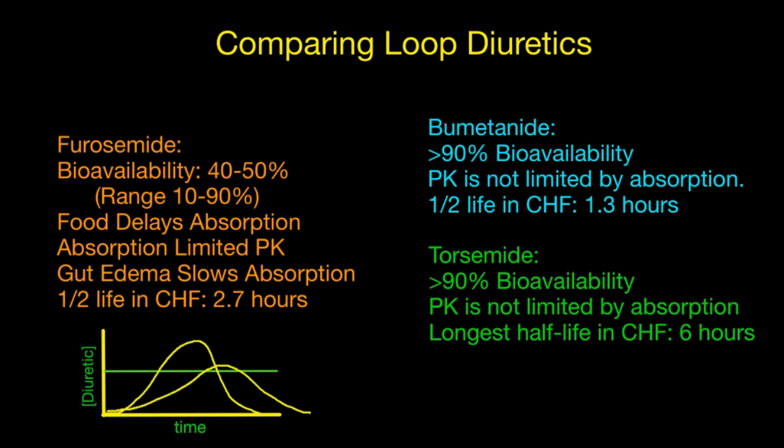With furosemide, I have concerns about the wide range of oral bioavailability, food interference with absorption, and gut edema slowing absorption. The key to dosing diuretics is hitting threshold as quickly as possible. Patients who are fluid overloaded are at risk of respiratory failure and severe functional limitations, so minimizing the dose-finding period matters. A systematic review suggests torsemide compared to furosemide reduced hospital admissions among patients with heart failure.